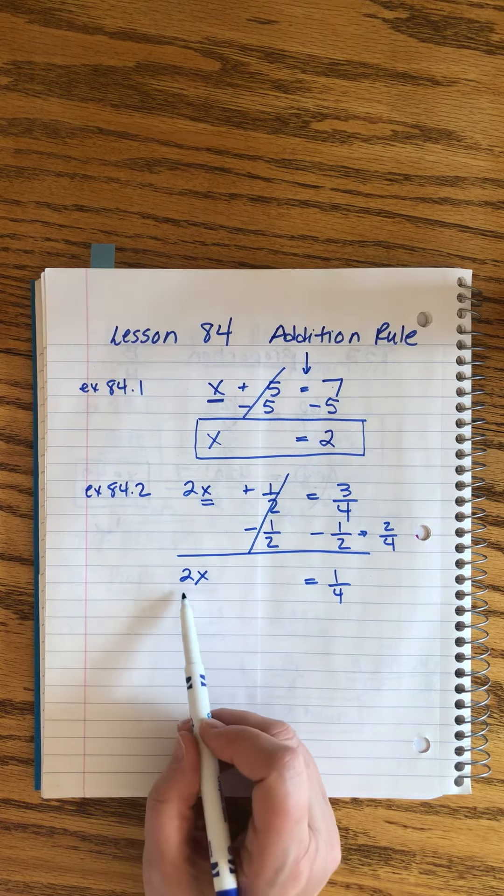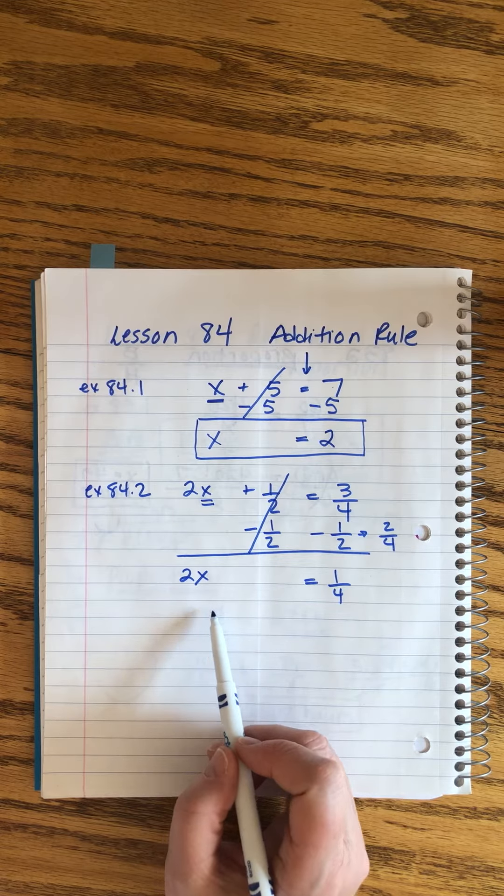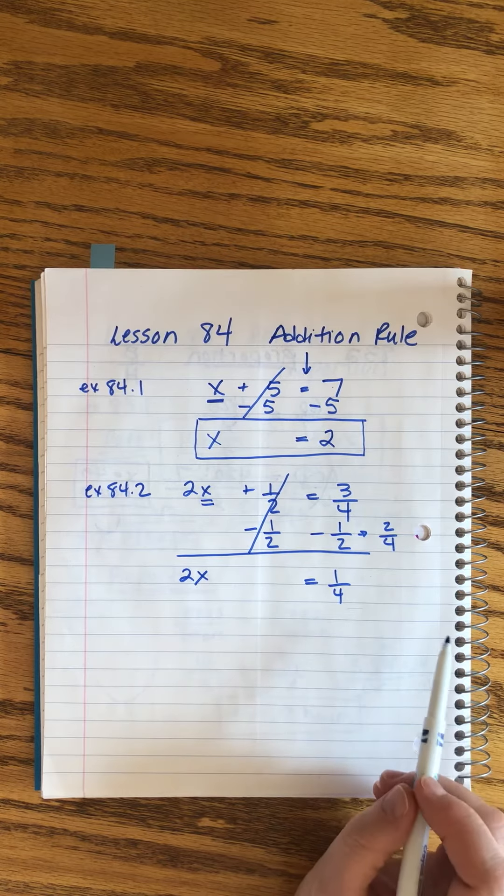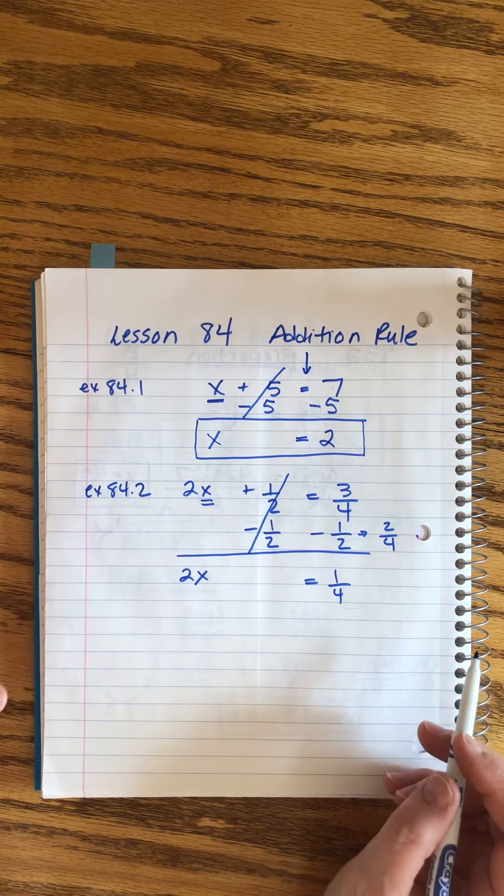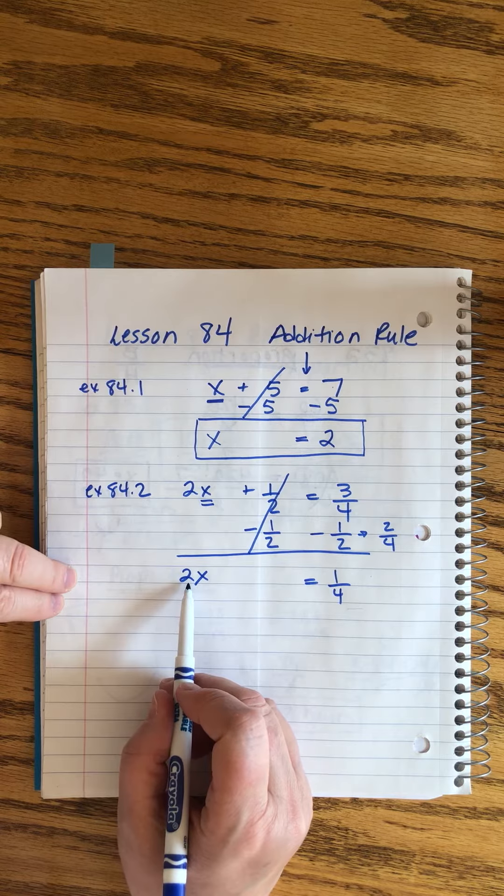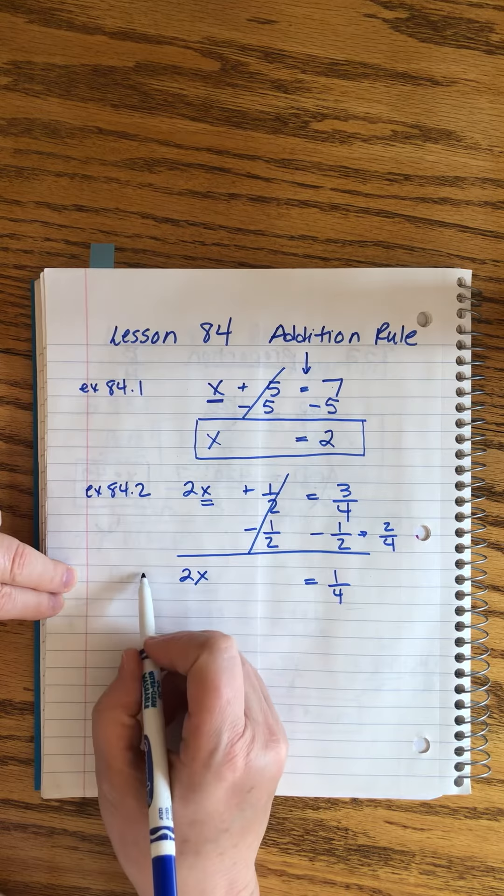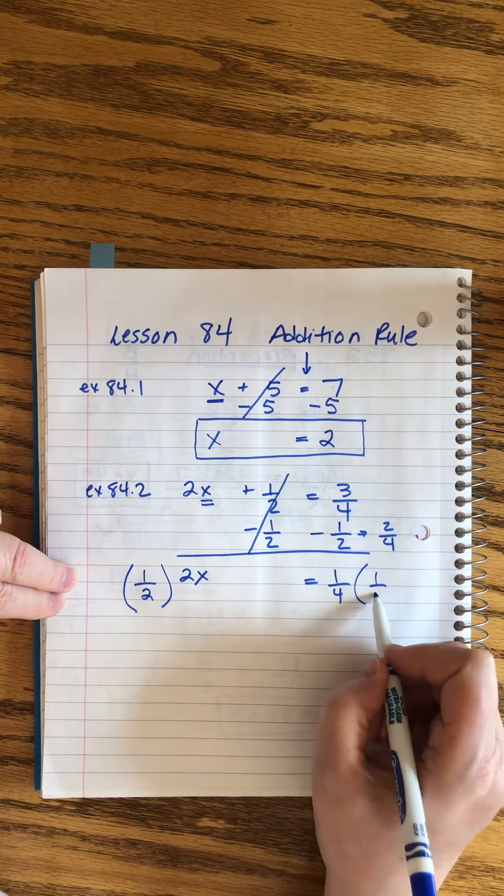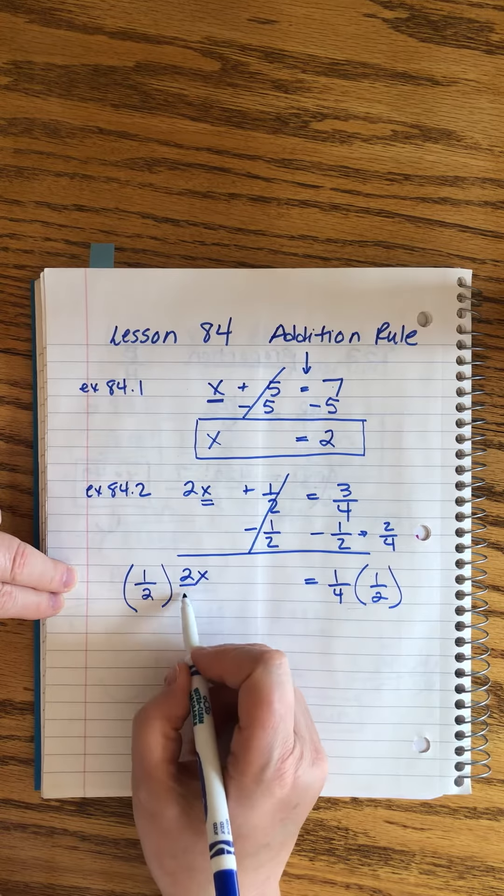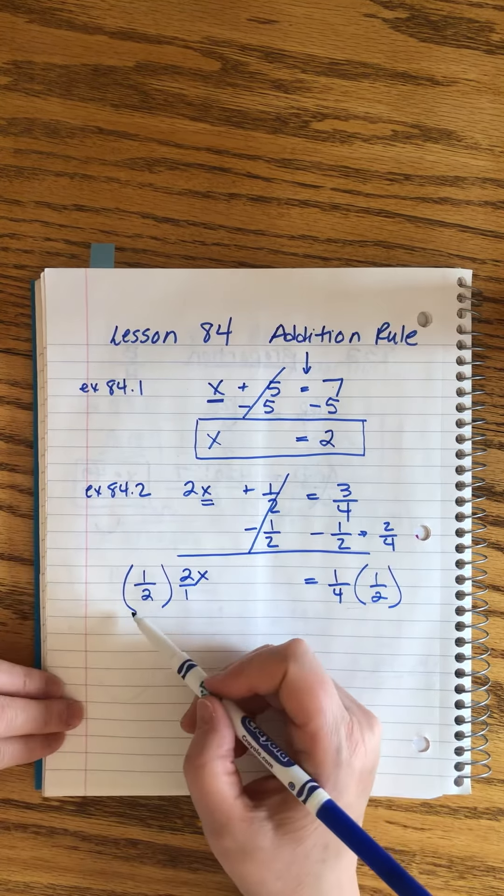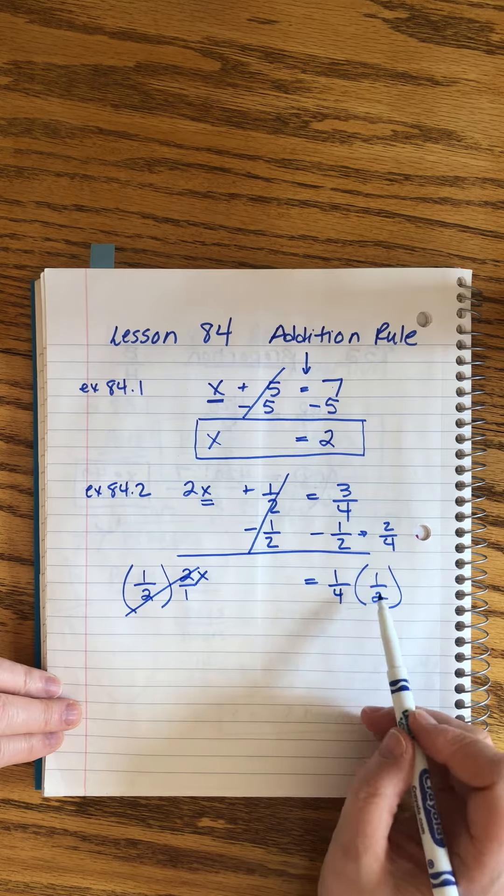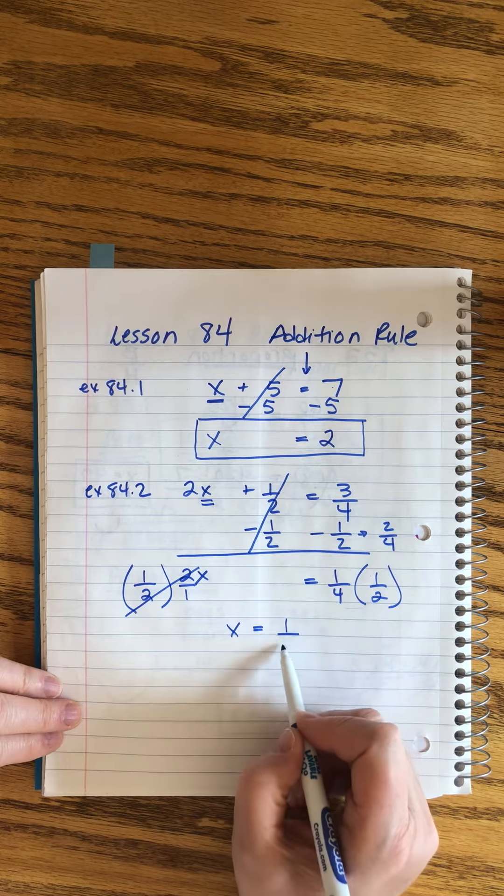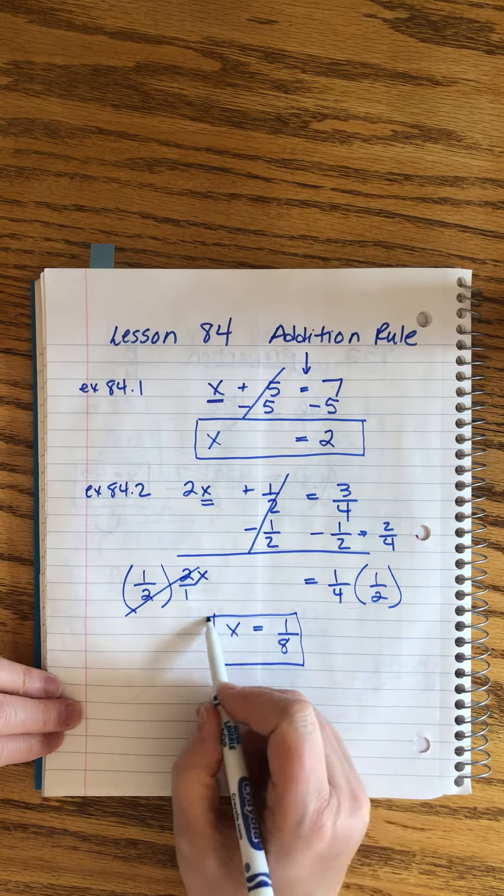Now my first instinct says, okay, divide by 2. But then when I go over here to divide by 2, I'm making a mess. I don't want to do that. So, as we've noticed with other problems, sometimes when you're trying to undo multiplication, instead of dividing, it helps to multiply by the reciprocal. And that looks way better over here. Sometimes it's nice to put that over a 1 so you can see, oh yeah, that cancels. This is way easier to deal with and we get x equals one over 8, which is the final answer.